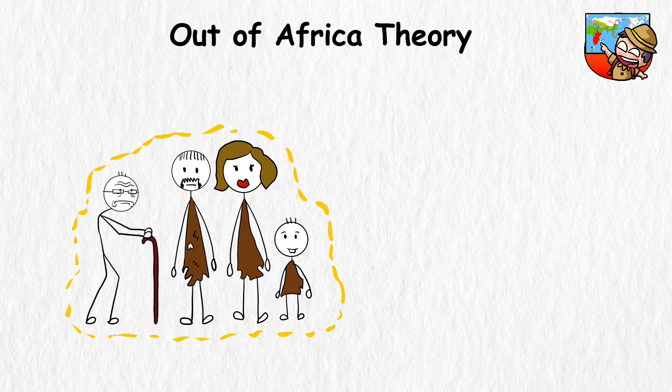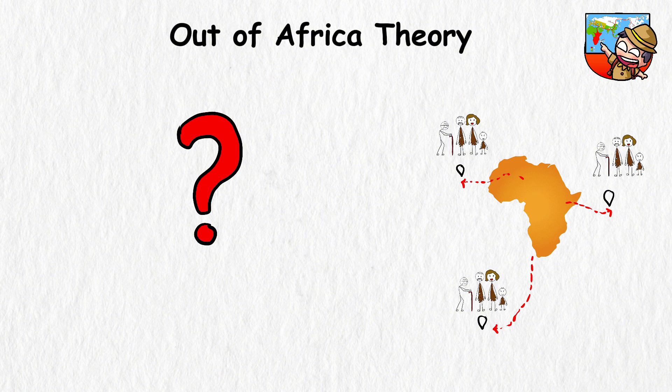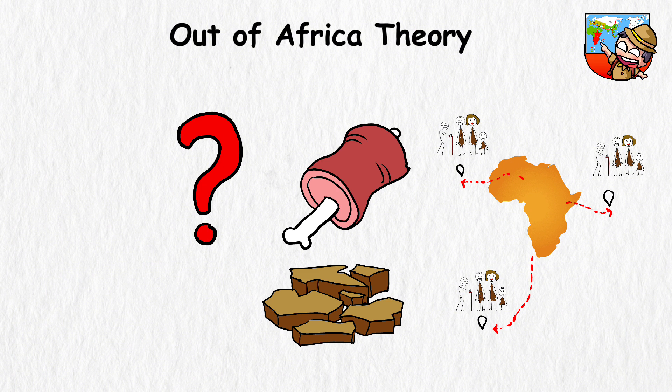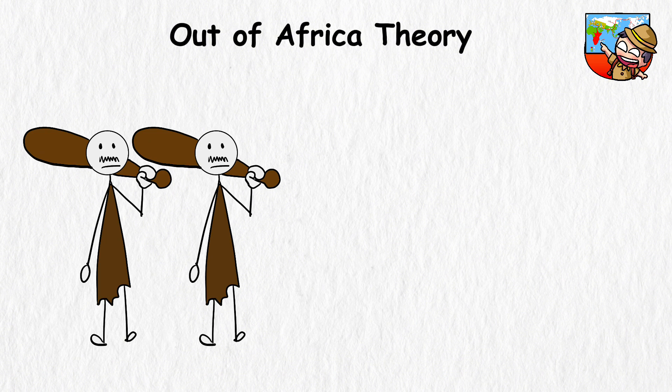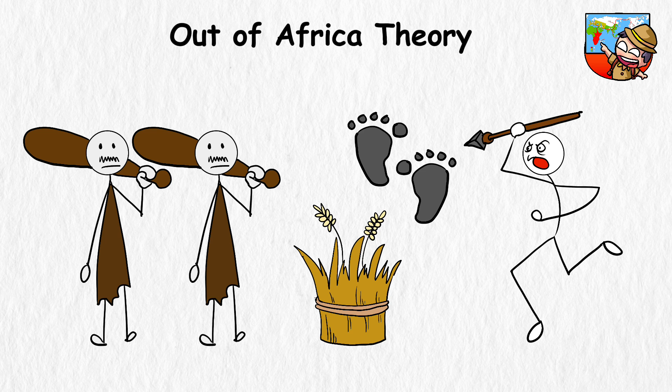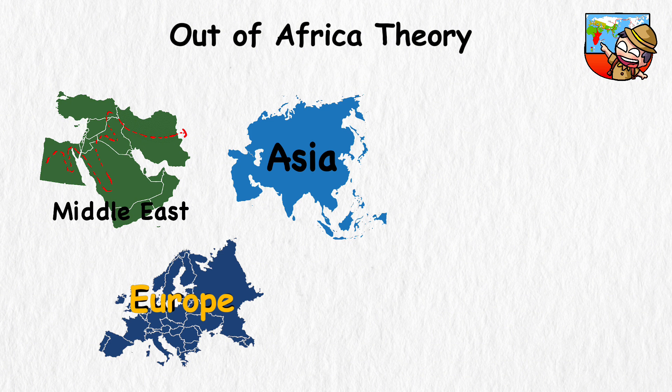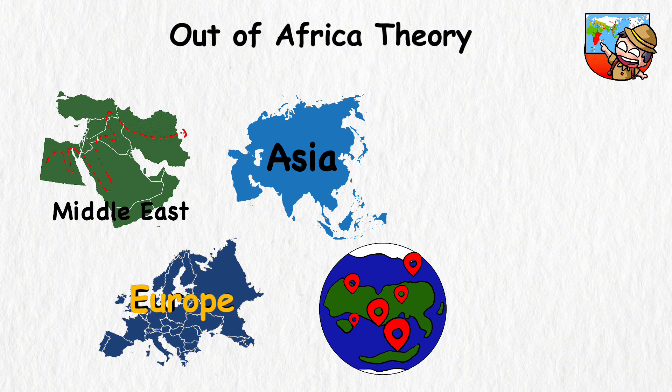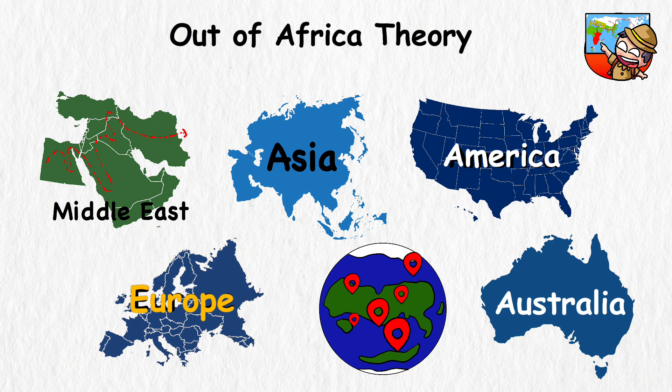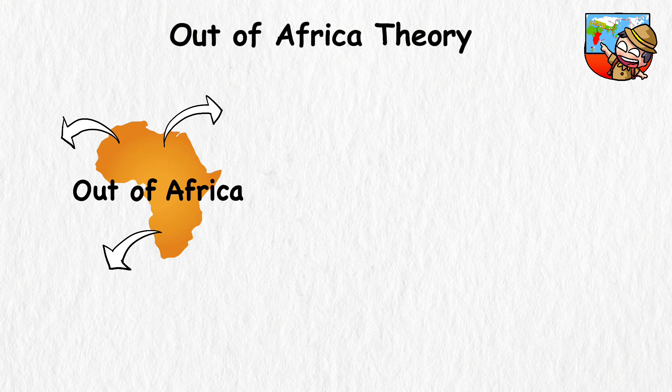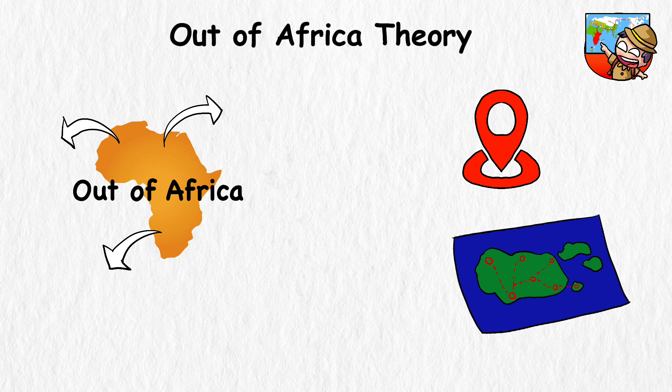The journey began around 70,000 years ago. Small groups of humans started migrating out of Africa, driven by curiosity, food, climate changes, or even a desire for adventure. These early explorers walked, hunted, gathered, and traveled across the Middle East into Europe and Asia and eventually spread throughout the world, even reaching places like Australia and the Americas. The Out of Africa Theory is like the GPS of human history because it maps our journey.